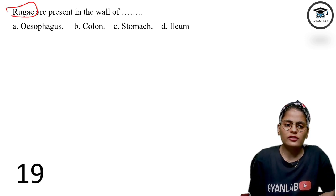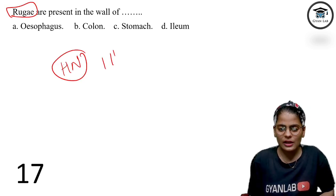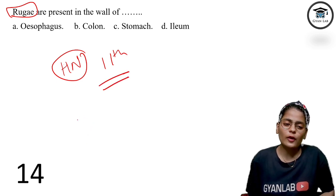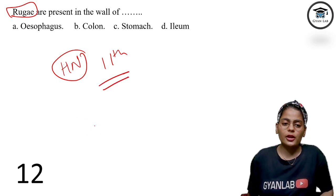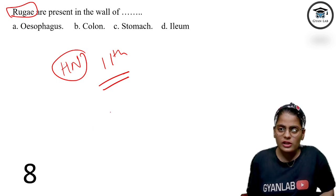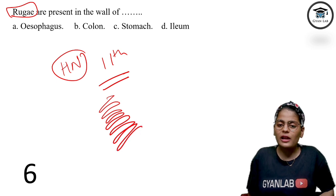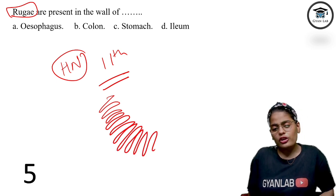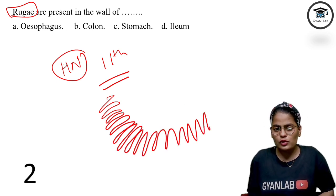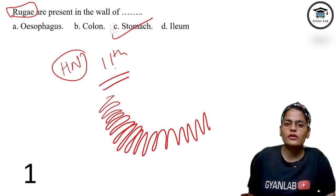Rugae — this came directly from the textbook, human nutrition chapter from class 11. We studied the different layers of the stomach: mucosal layer, sub-mucosal layer, intestinal layer, and finally the stomach lining. The folding present in the internal wall of the stomach is called rugae. So rugae are present in the internal wall of the stomach.